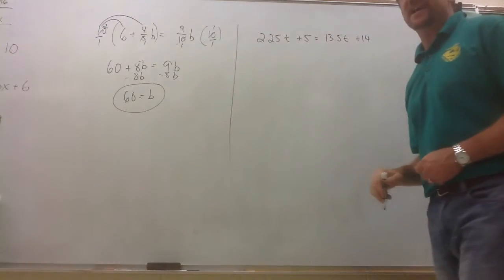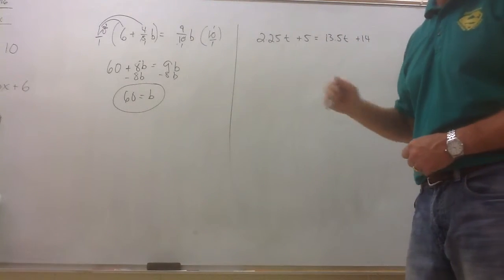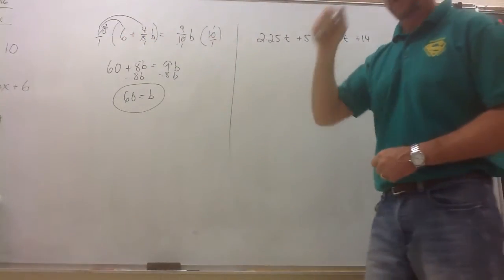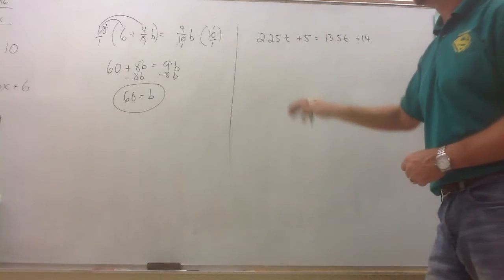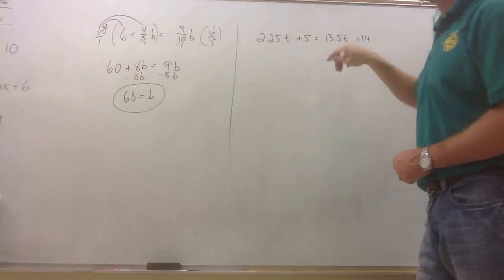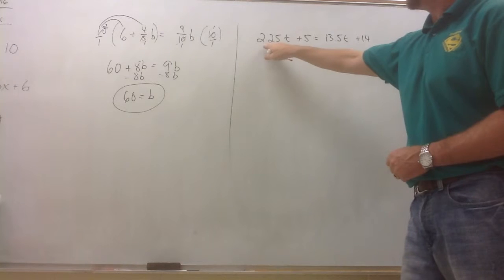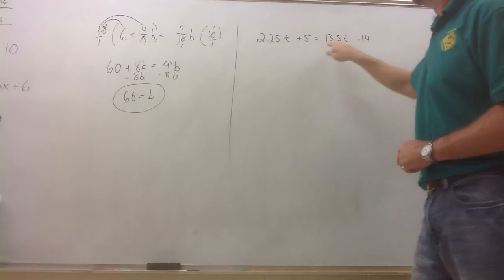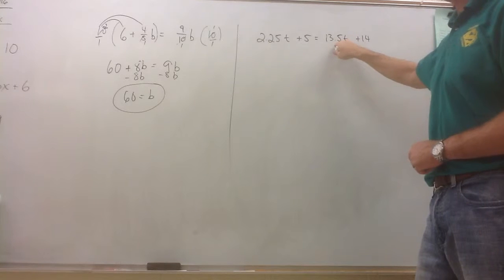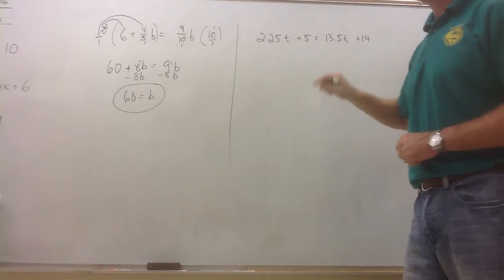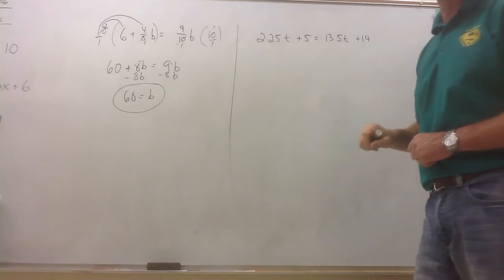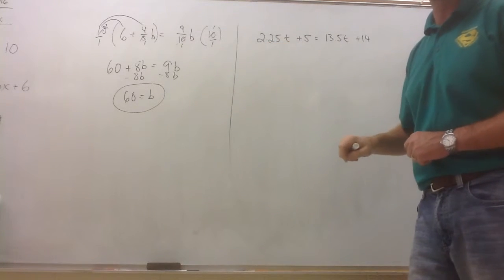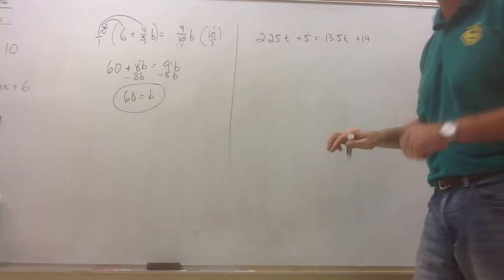To eliminate decimals, pretty much the exact same thing, only instead of multiplying by the least common multiple, you're going to multiply by a power of 10 to eliminate however many decimal places you need to clear. On the left side, we have 2.25t, two decimal places. Over here, we have 13.5t, only one decimal place. The greater number, though, is the two decimal places. Multiplying by 100 would move that decimal two places. So that's what I'm going to do.